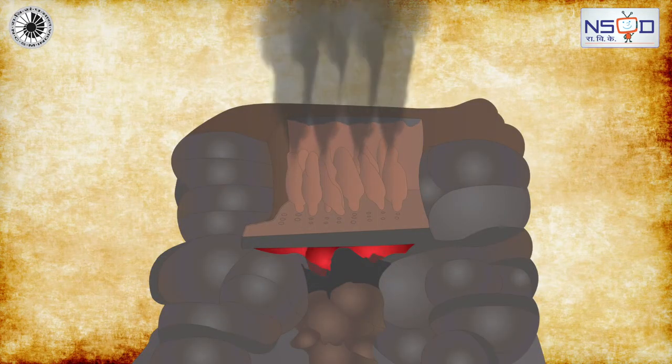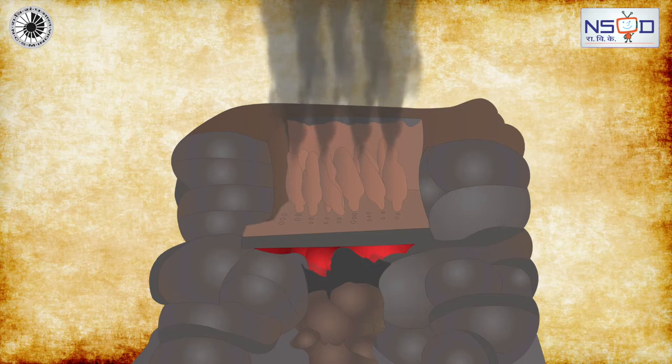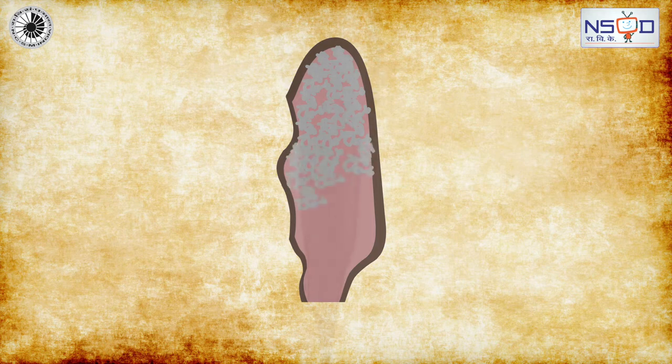The retorts were used to trap the vaporized gas containing zinc. These retorts were later cooled to extract zinc.